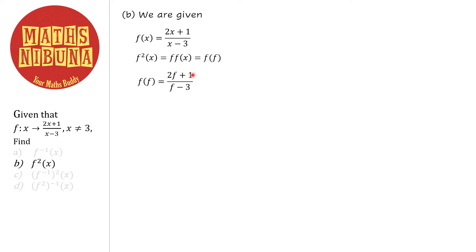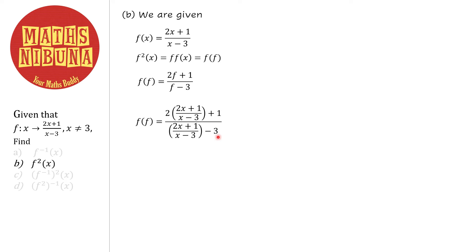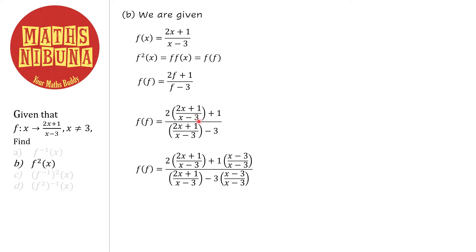Since f(x) = (2x+1)/(x-3), we replace every x with f(x). So f(f(x)) = (2f+1)/(f-3), where f = (2x+1)/(x-3). Substituting: the numerator becomes 2·(2x+1)/(x-3) + 1, and the denominator becomes (2x+1)/(x-3) - 3. To simplify, we make the denominators the same by multiplying by (x-3)/(x-3), giving numerator 4x+2 and part of the denominator calculation.